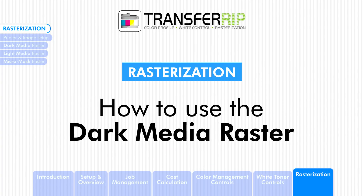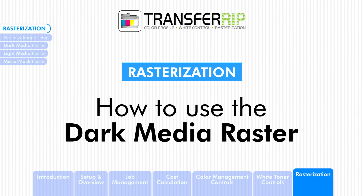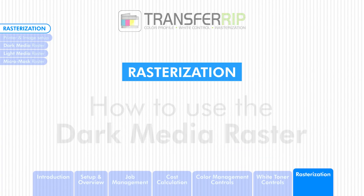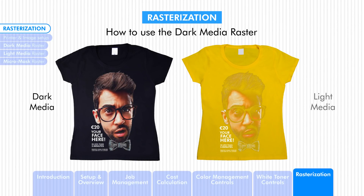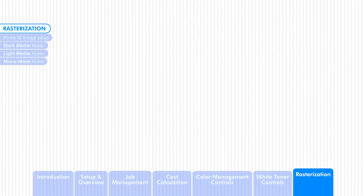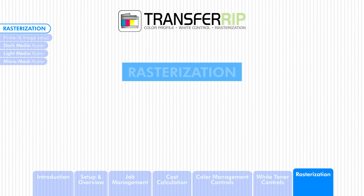The dark media raster is best used for printing onto dark garments. To have a successful transfer onto dark garments, the dark areas of the image are not required, so the dark media raster removes those areas. The dark media raster is not recommended for transferring to light garments, because the dark areas it removes are required for printing on light garments.